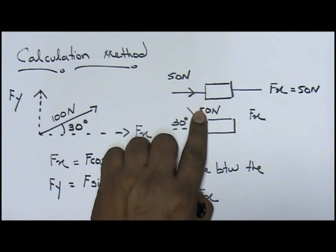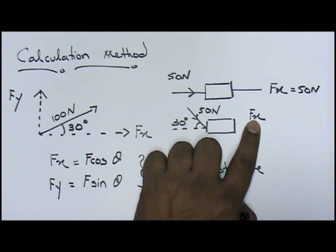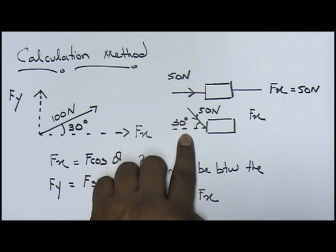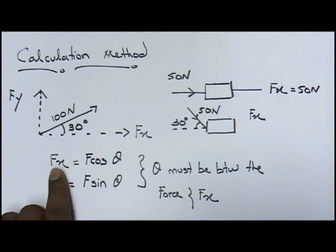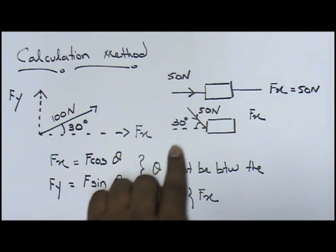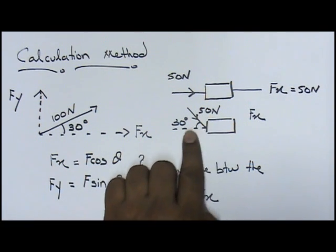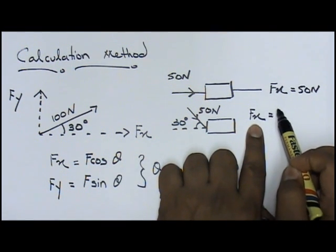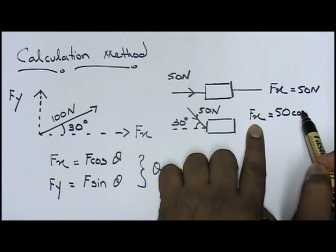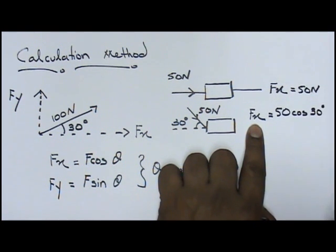For you to find out what is the force on the x direction, you have to bring your 50 to the x direction. That's the reason why you learn this. Fx equals to F cos theta. So you just take 50 and you tell cos 30. You bring it to the Fx direction, 50 cos 30.